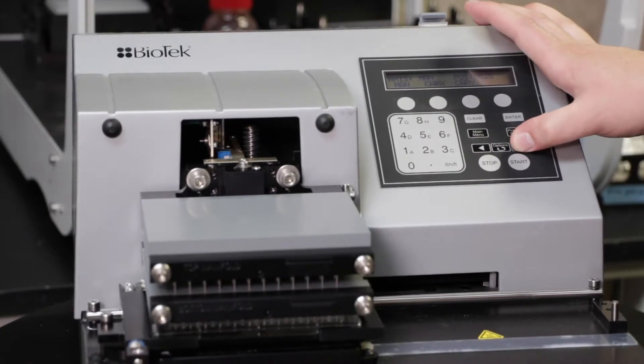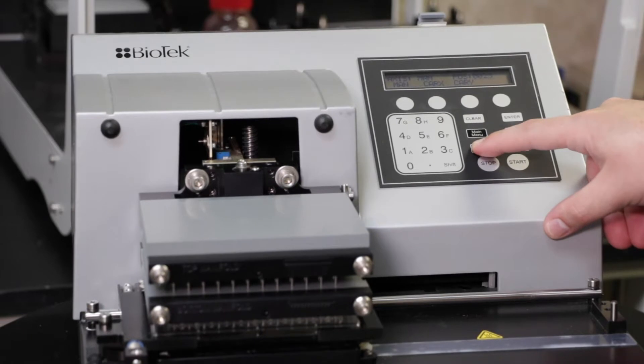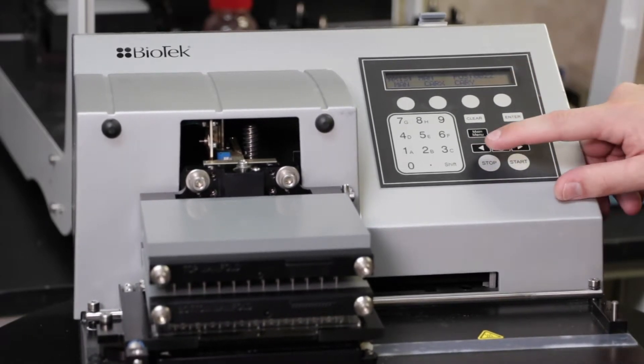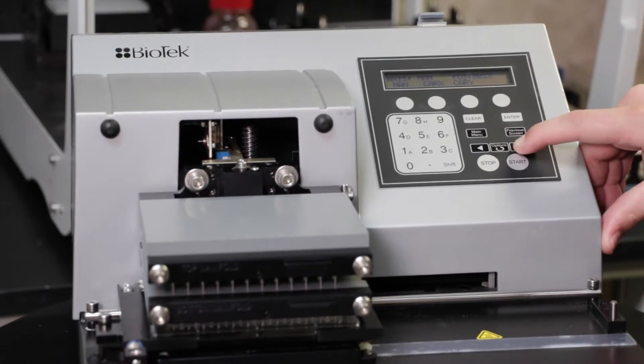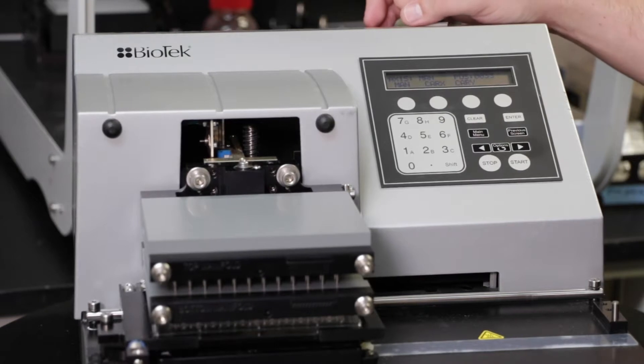You can jog by pressing either the right or left arrows. Decreasing the steps will lower the manifold, lowering the Z. Increasing the steps will raise the manifold. This is useful for if you want to leave a certain level of volume in each well or if you want to avoid a cell layer or any chips at the bottom of your plate.